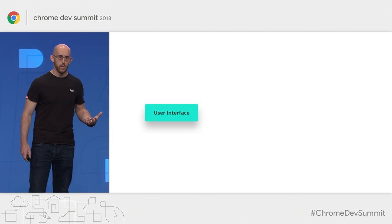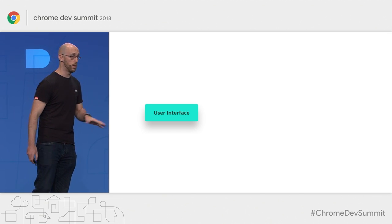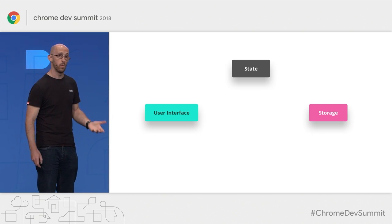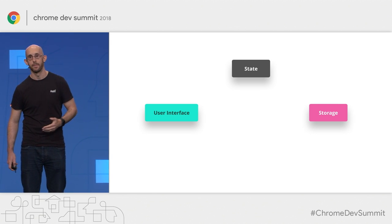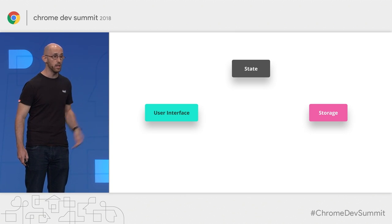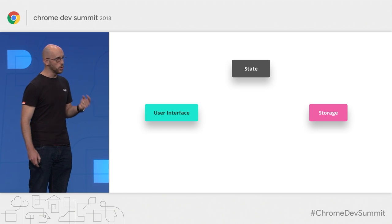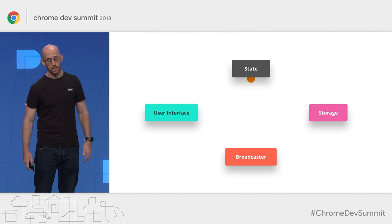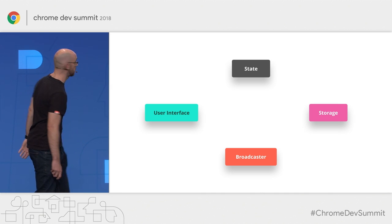Imagine you have an actor whose job is to run your user interface — that's its area of ownership and only that. You might also have another actor whose job is to handle state for your application, and yet another one that handles storage. In a typical interaction like favoriting an item, the UI sends a message to state saying this was favorited. In turn, the state actor sends a message to storage to say we need to remember they favorited this item. You could also introduce a new actor that broadcasts — when state changes, you'd want to reflect that in both the UI and storage.